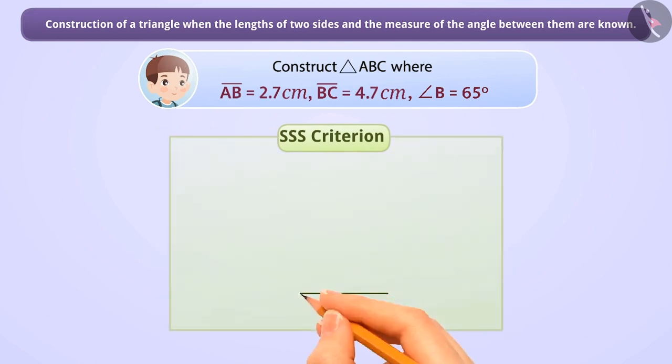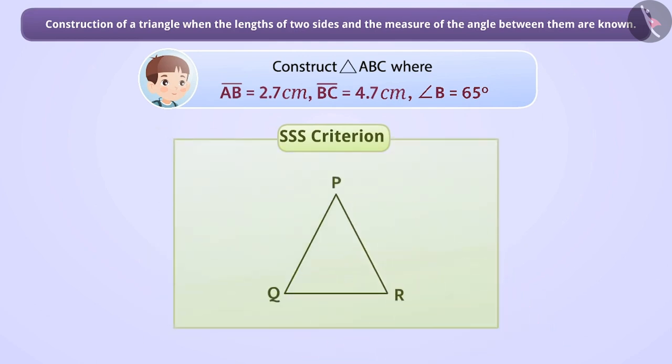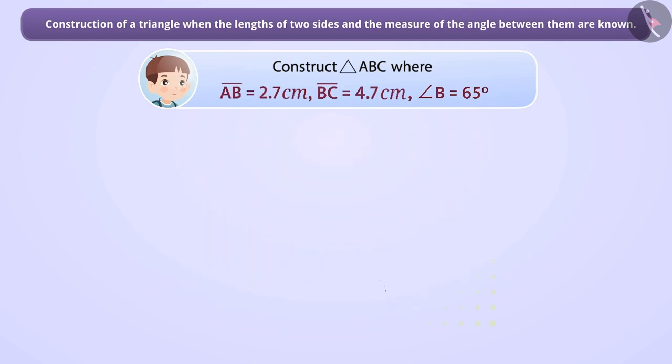Rahul knows how to construct a triangle based on the SSS criterion. Under the SSS criterion, the length of all three sides of a triangle must be known in order to construct a triangle. Here, Rahul knows the length of sides AB and BC of triangle ABC, but he doesn't know the length of side CA.